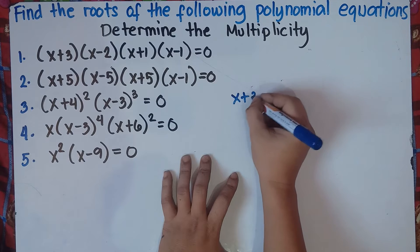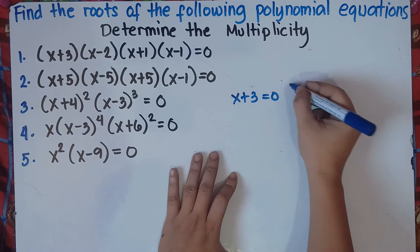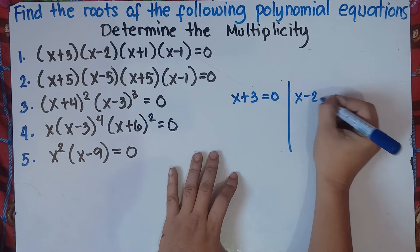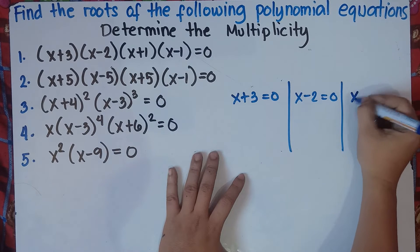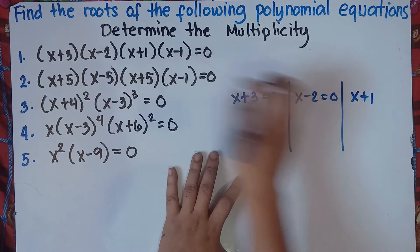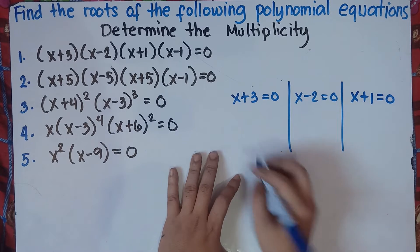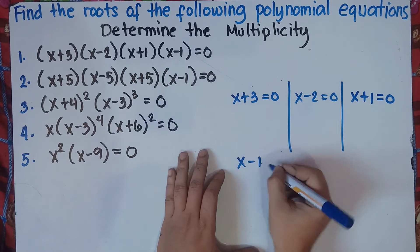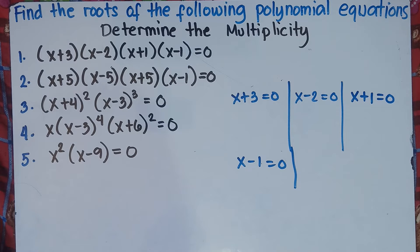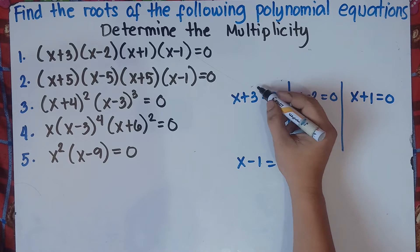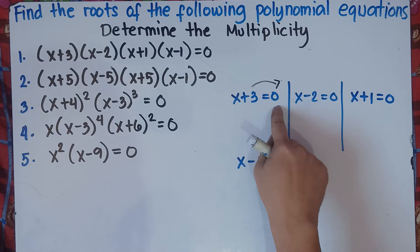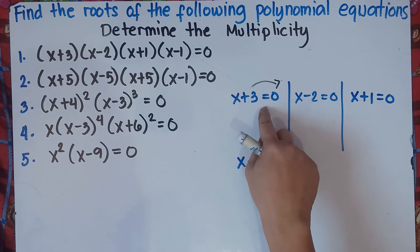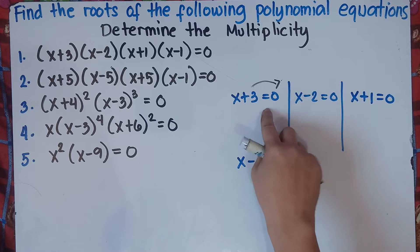For number one, we have x plus 3 equals 0, x minus 2 equals 0, x plus 1 equals 0, and x minus 1 equals 0. Now when you equate each factor into 0, you find the value of x. Just simply transpose the constant from left to right. Once you transfer across the equal sign, you change the sign.